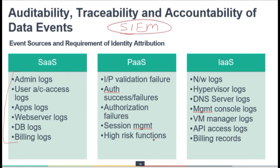In IaaS — infrastructure as a service — the customer should monitor all recommended events in addition to those from SaaS and PaaS, making it a superset. Additional logs to monitor include network logs, hypervisor logs, DNS server logs, management control console logs, and other logs that are very important for monitoring purposes.